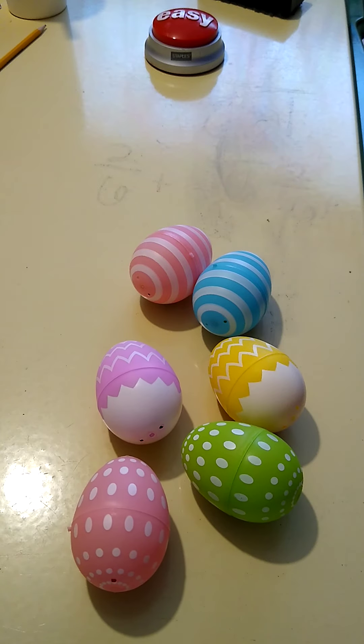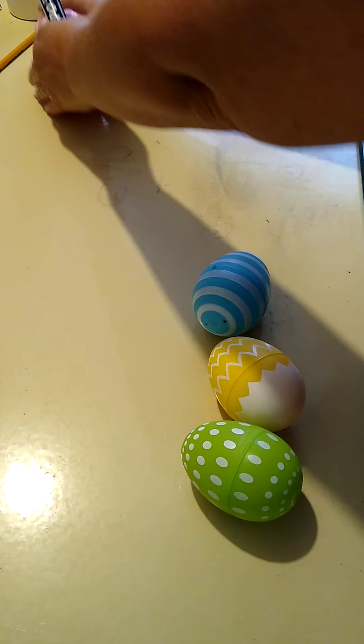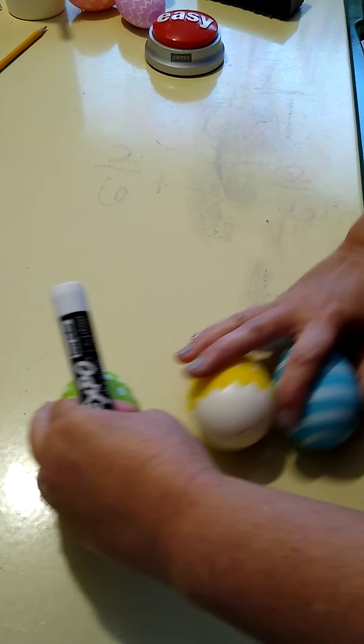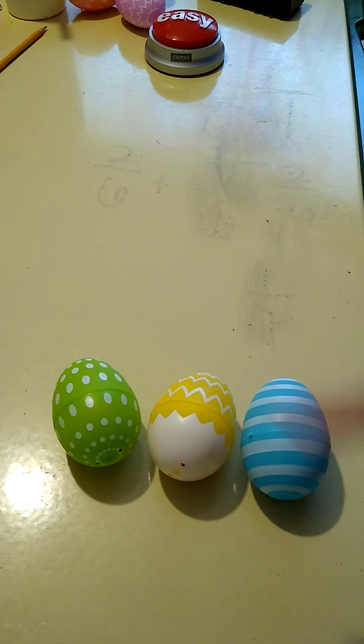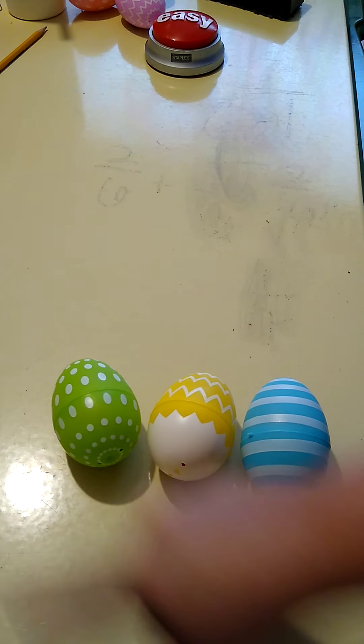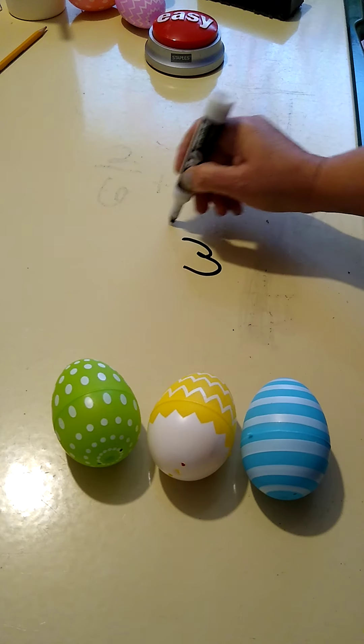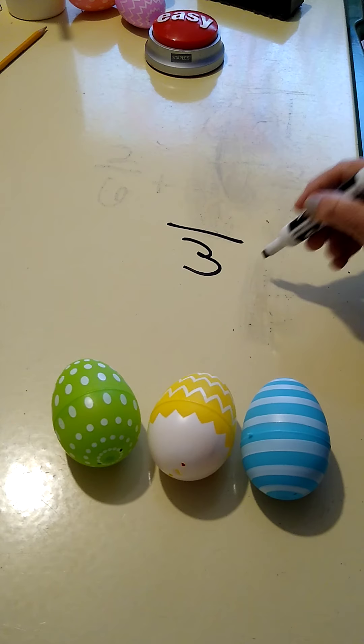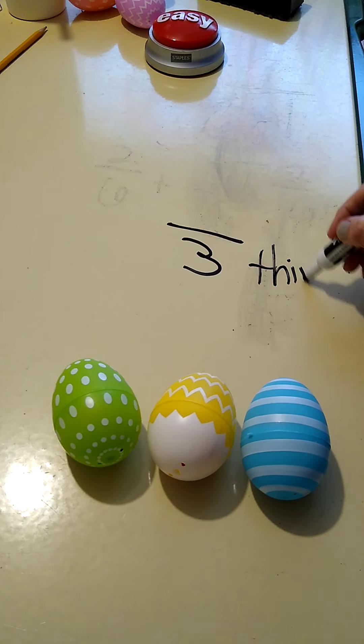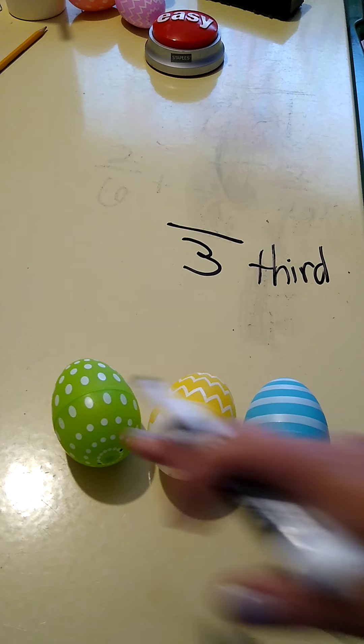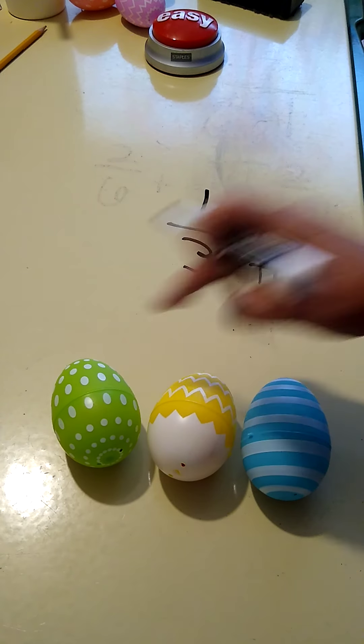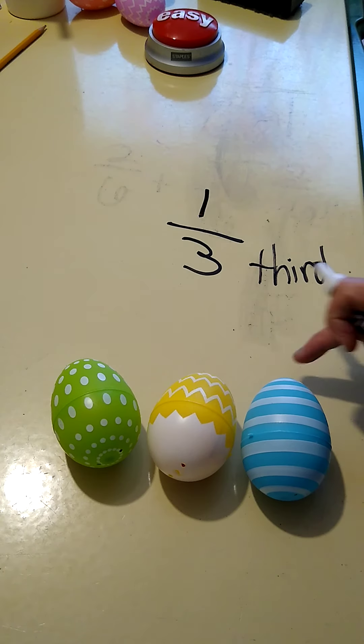Now let's go to three eggs. One, two, three. So my group is three, so now I am working with thirds. One-third is green, one-third is yellow, one-third is blue.